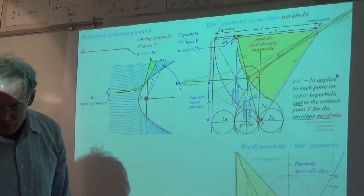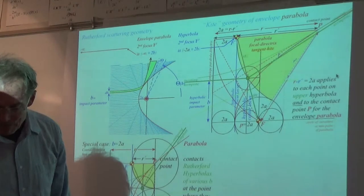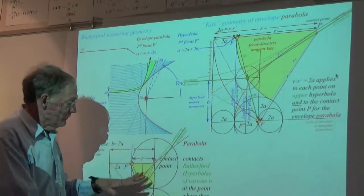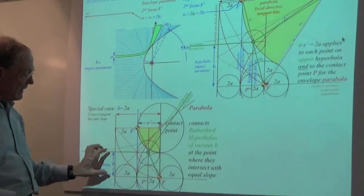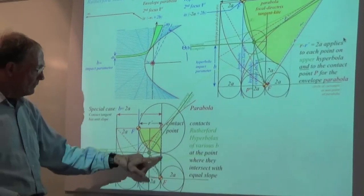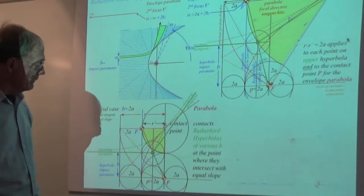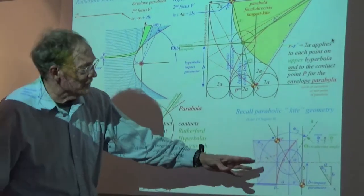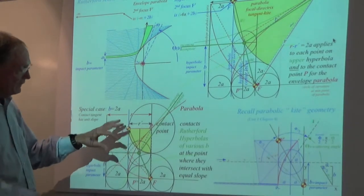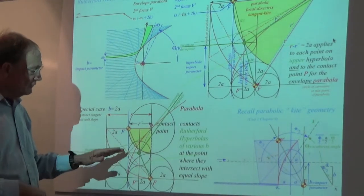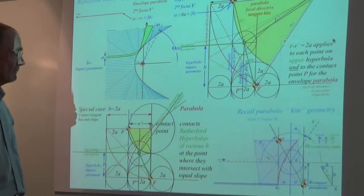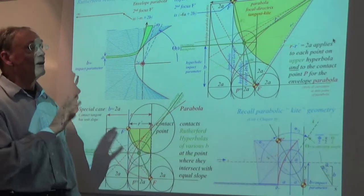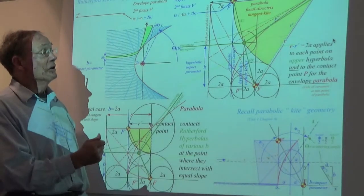As you bring the impact parameter down to where B equals exactly 2A, it makes a little square - a square kite. The kite transitions through that magic point as you vary B. These are interesting geometrical features of a very old but very important piece of physics. The Rutherford Scattering Experiment can really be said to be an earth-shaking - a nuclear-shaking - one.